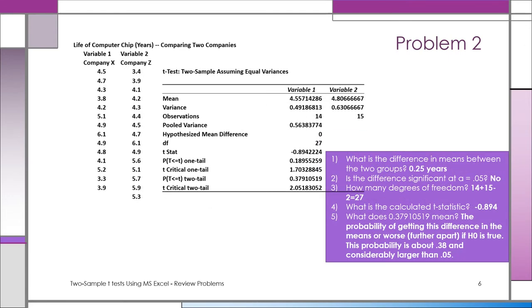You should be able to say what the difference is between the two means, whether the difference is significant at whatever alpha level you like to work at, how many degrees of freedom, what the calculated t-statistic is, and what a particular value from the printout means. Let's do some answers by looking at the printout. Question one: What's the difference in means? If you take the mean for variable one and subtract it from variable two, you get a difference of 0.25 years. It's not very much, is it?